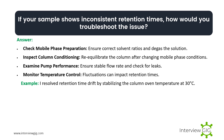If your sample shows inconsistent retention times, how would you troubleshoot the issue? Check mobile phase preparation — ensure correct solvent ratios and degas the solution. Inspect column conditioning — reequilibrate the column after changing mobile phase conditions. Examine pump performance — ensure stable flow rate and check for leaks. Monitor temperature control — fluctuations can impact retention times. Example: I resolve retention time drift by stabilizing the column oven temperature at 30°C.